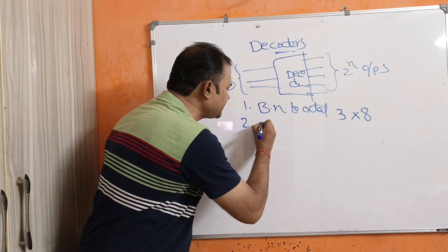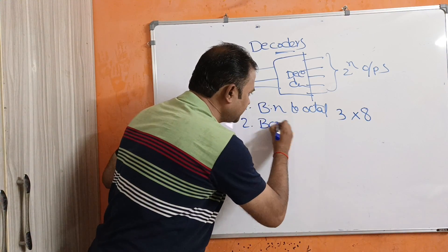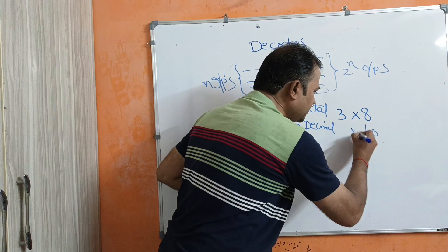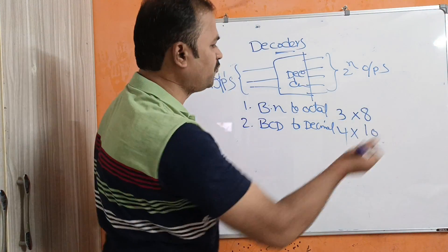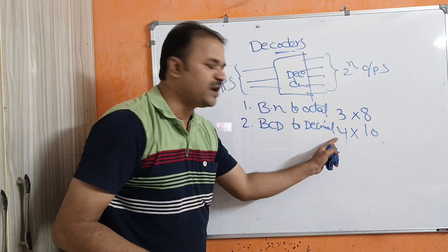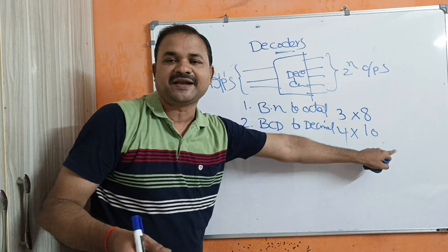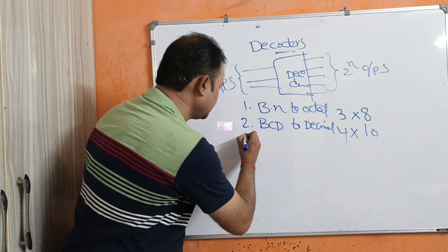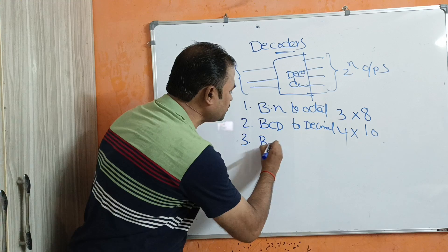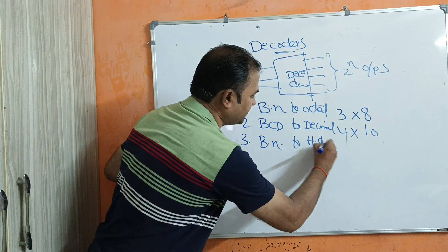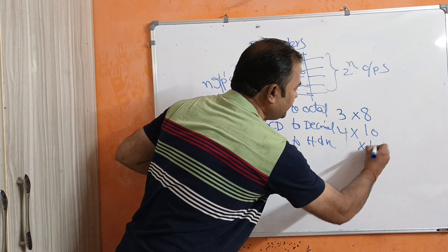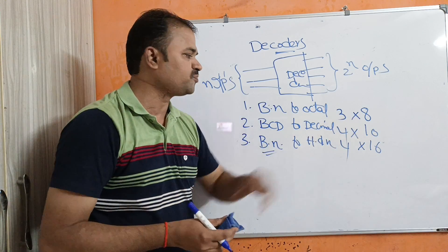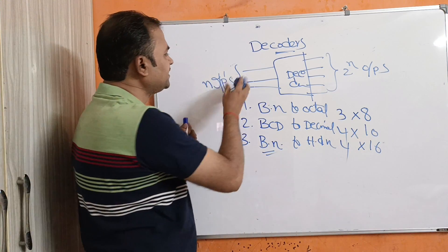Next, in order to convert a BCD number to a decimal number — decimal means 10, and BCD means 4 inputs — so it is a 4-by-10 decoder. Actually 2 power 4 equals 16, so the maximum possible outputs are 16, but we only use 10 for decimal. That covers what a decoder is.